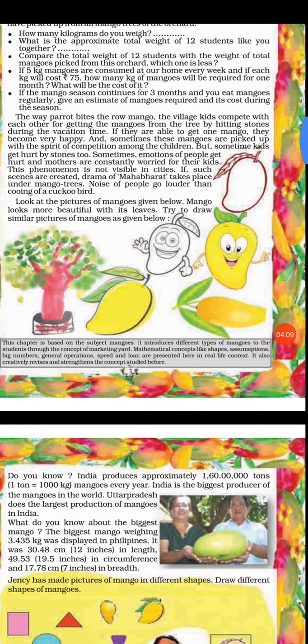The way a parrot bites the raw mango, village kids compete with each other to get mangoes from the tree by hitting stones during vacation time. If they are able to get one mango they become very happy. But some kids get hurt by stones too, and mothers are constantly worried for their kids. This phenomena is not visible in cities — drama of Mahabharat takes place under mango trees, and the noise of people goes louder than the cooing of a cuckoo bird.